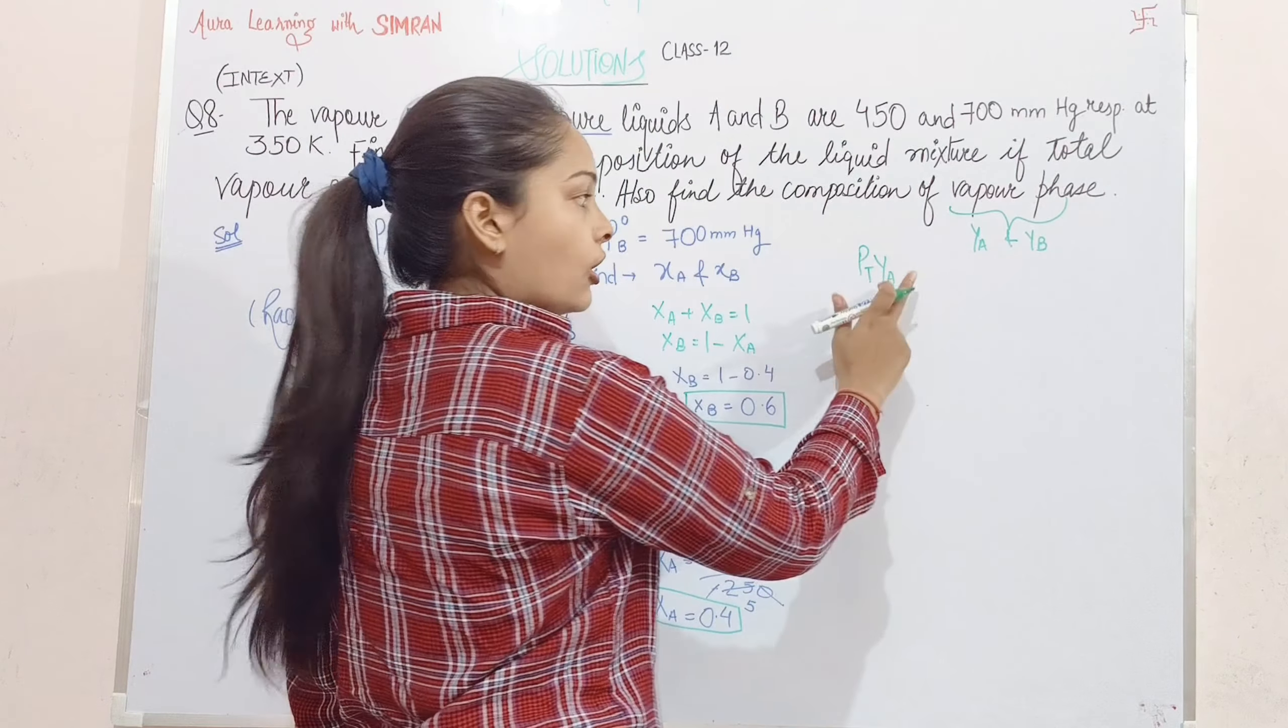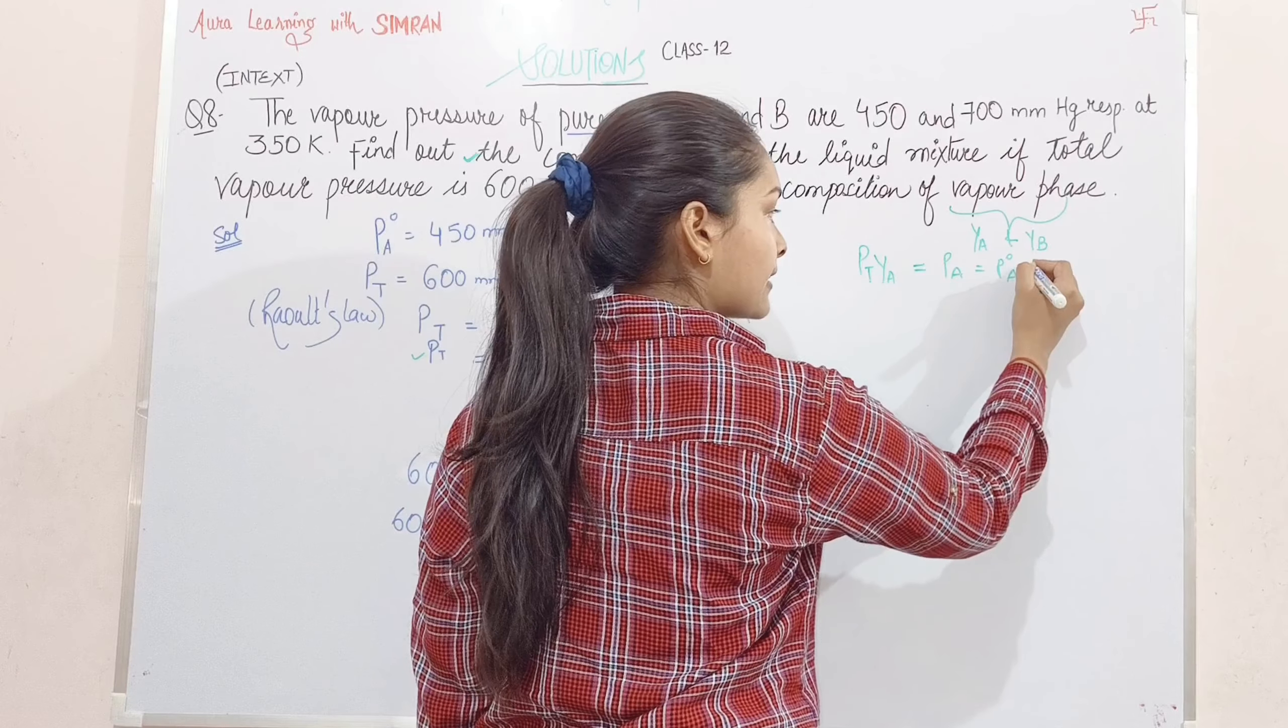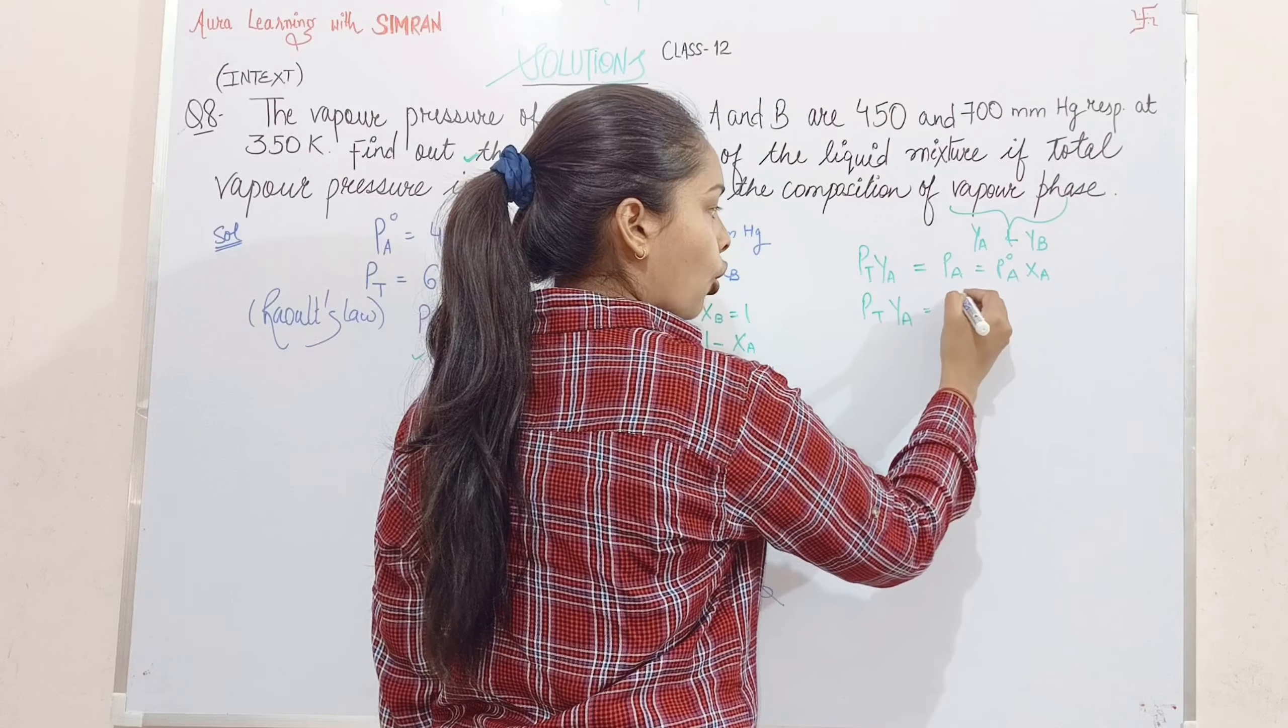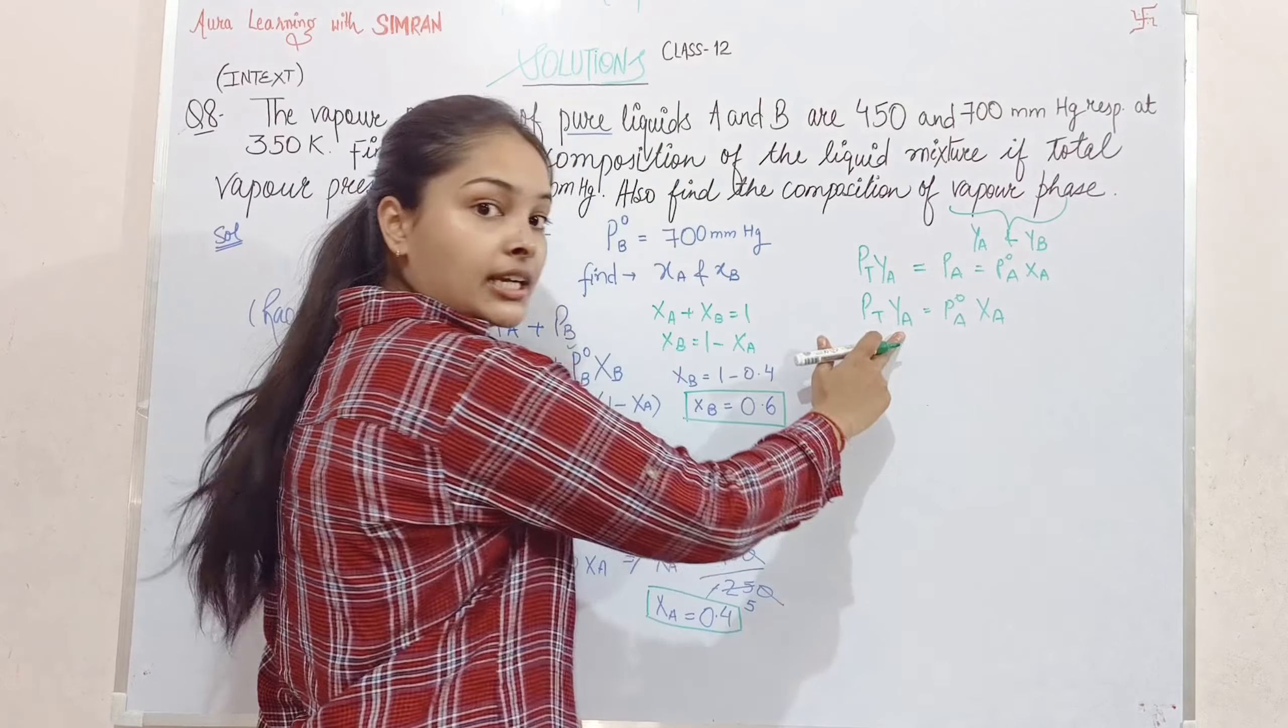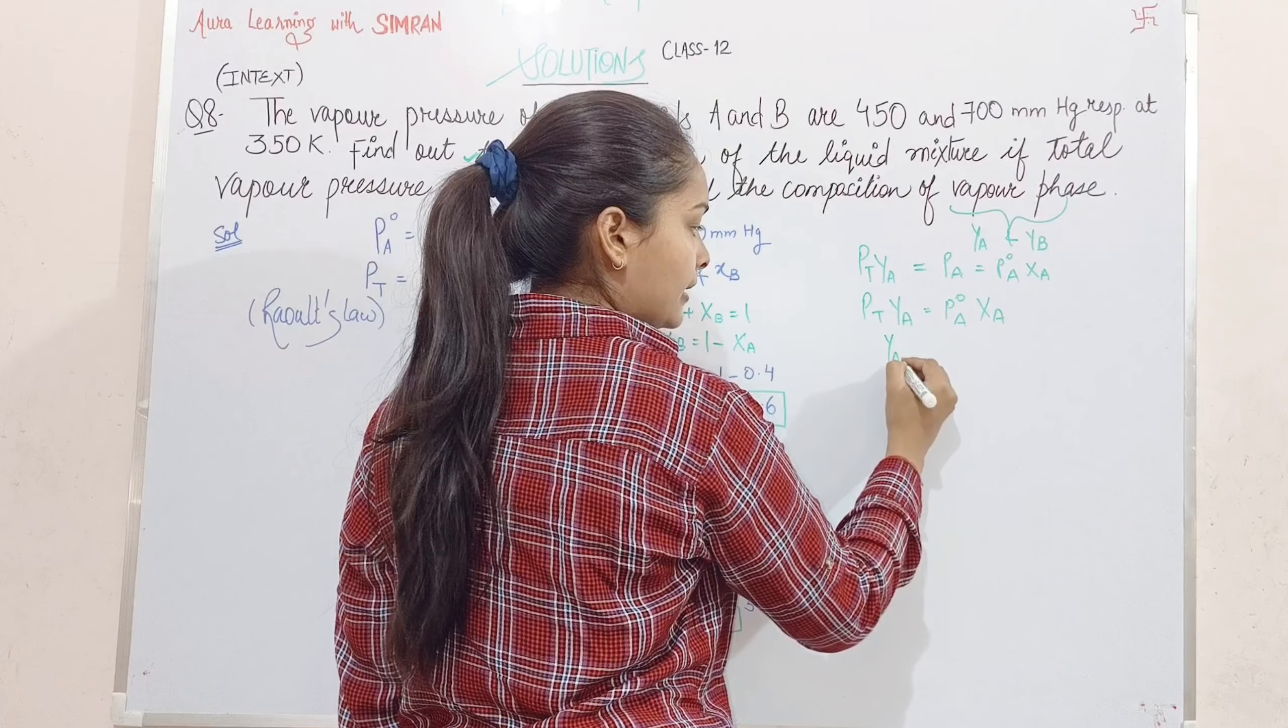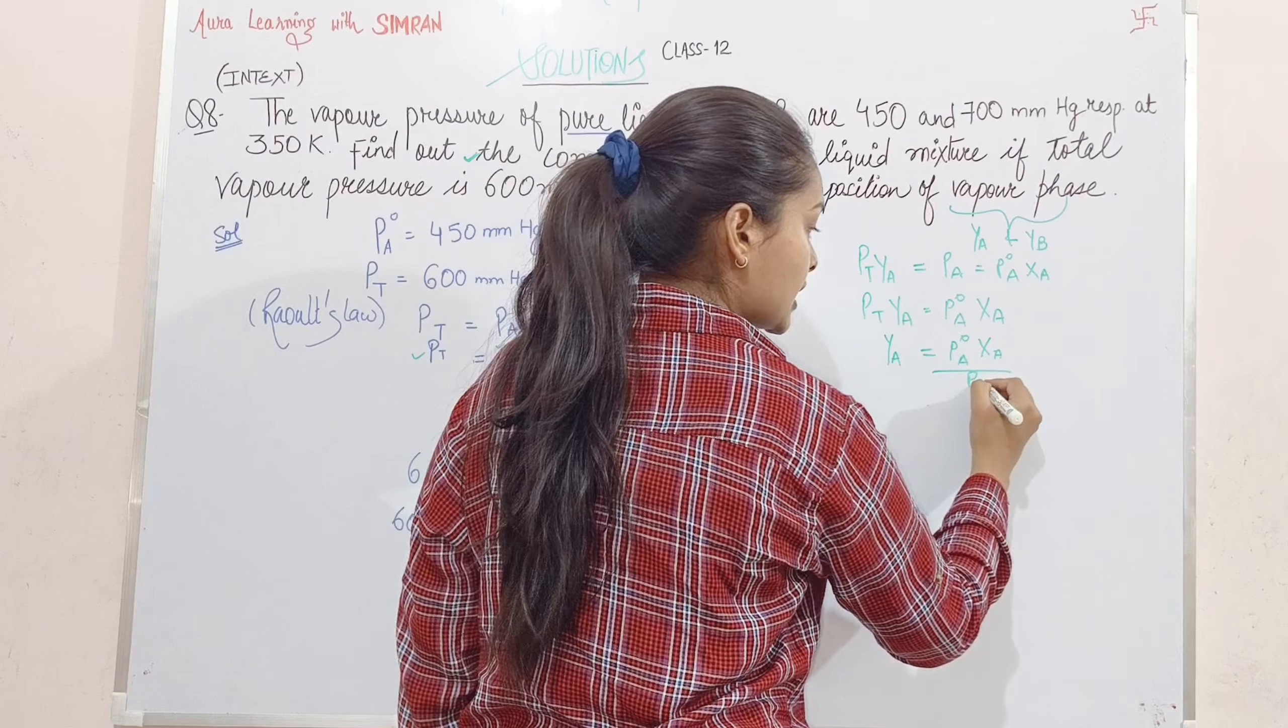Pt·yA equals PA, which equals P°A·χA. So yA equals P°A·χA divided by Pt. We need to find yA value for the vapor phase.